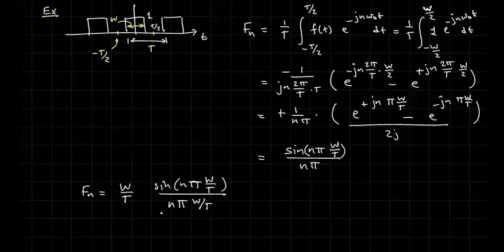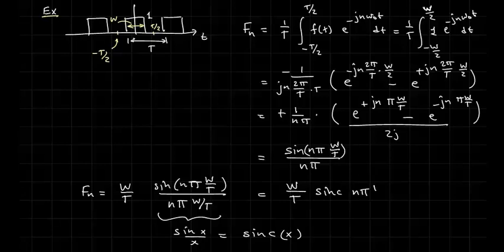And this right here is of the form sine X over X. And we have a special name for that, which is called the sinc function, sinc X. So we can write this as W over T times the sinc of n pi W over T.